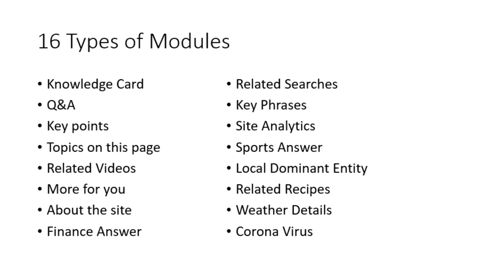You will face 16 types of modules in this HIT app: a Knowledge Card module, Q&A module, Key Points module, Topics on This Page, Related Videos, More for You About This Site, Finance Answer, Related Searches, Key Phrases, Sources, Site Analytics, Sports Answer, Local Dominant Entity, Related Recipes, Weather Details, and Coronavirus module.